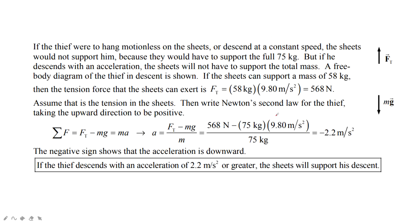Then we can do the analysis. We find the acceleration. When we use this equation, we do the calculation. We find acceleration is negative 2.2 meters per second squared.